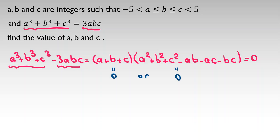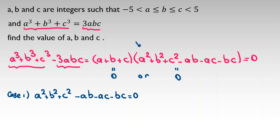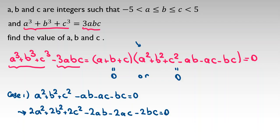We consider both cases. Let's consider Case 1 first: a squared plus b squared plus c squared minus ab minus ac minus bc equals 0. We multiply it by 2, giving 2a squared plus 2b squared plus 2c squared minus 2ab minus 2ac minus 2bc equals 0.